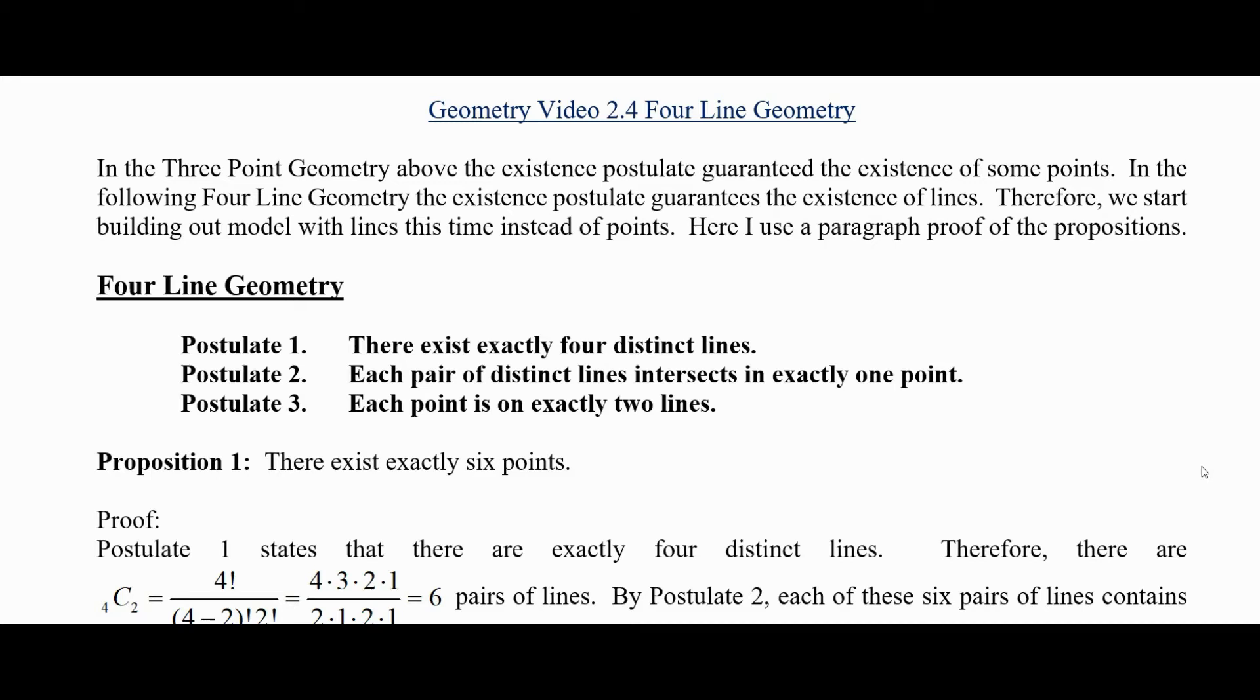Hello. In this geometry, let's look at a four-line geometry, a finite geometry. In the three-point geometry from the previous video, the existence postulate guaranteed the existence of some points, specifically three. In the following four-line geometry, the existence postulate guarantees the existence of lines.